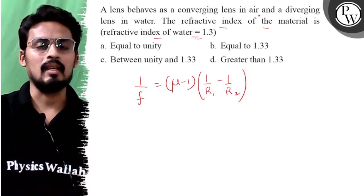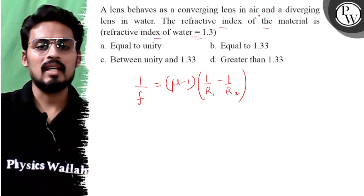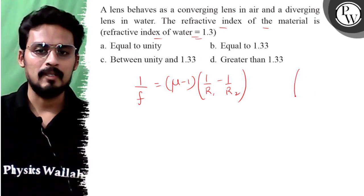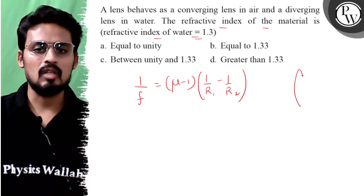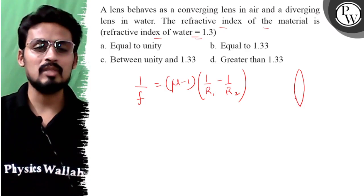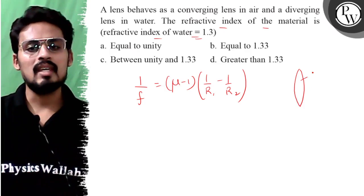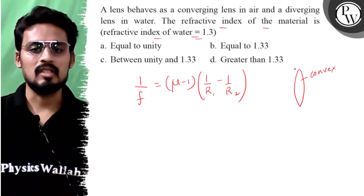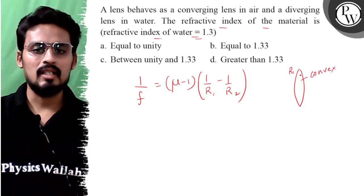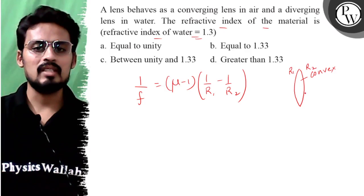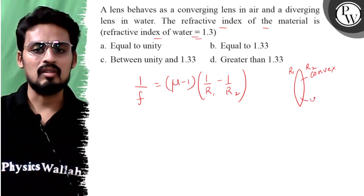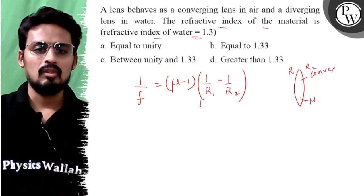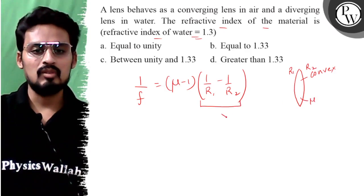So we assume that this lens is of the convex type, because if we took a concave lens, it would be diverging in air. So let's take a convex lens for understanding. Its radius of curvature on this side is R1, on the other side R2, and refractive index μ. In air, this value will be positive.